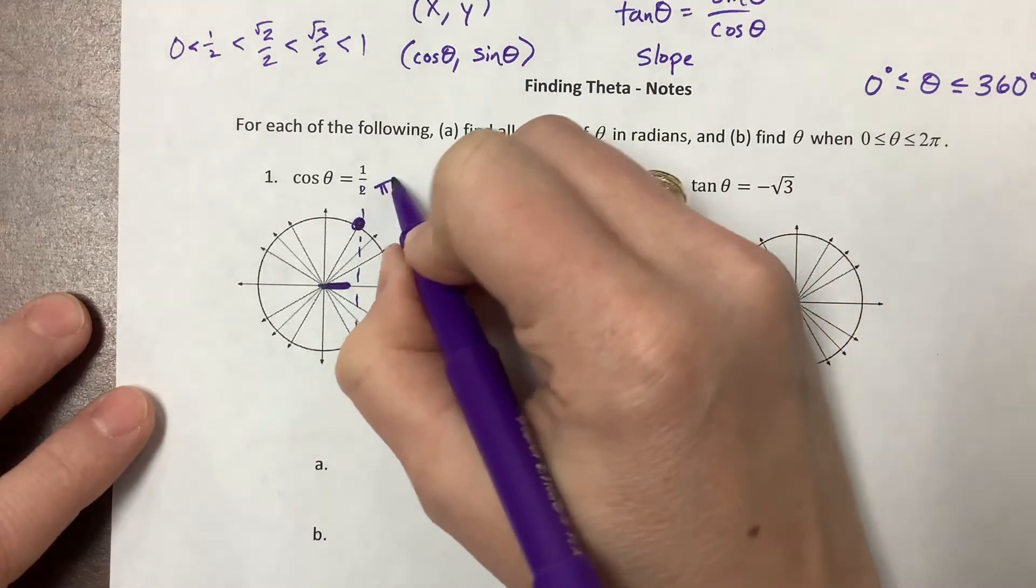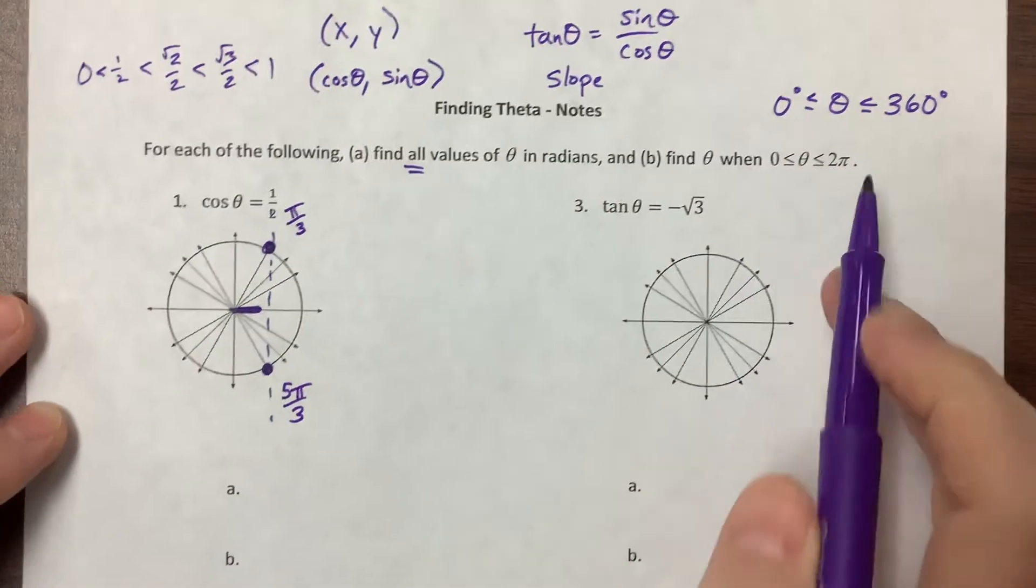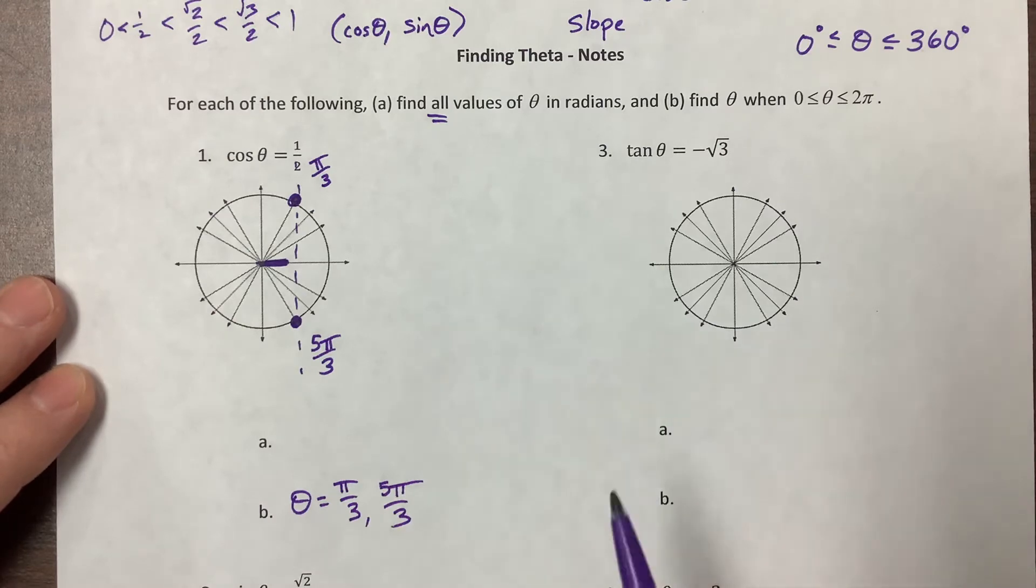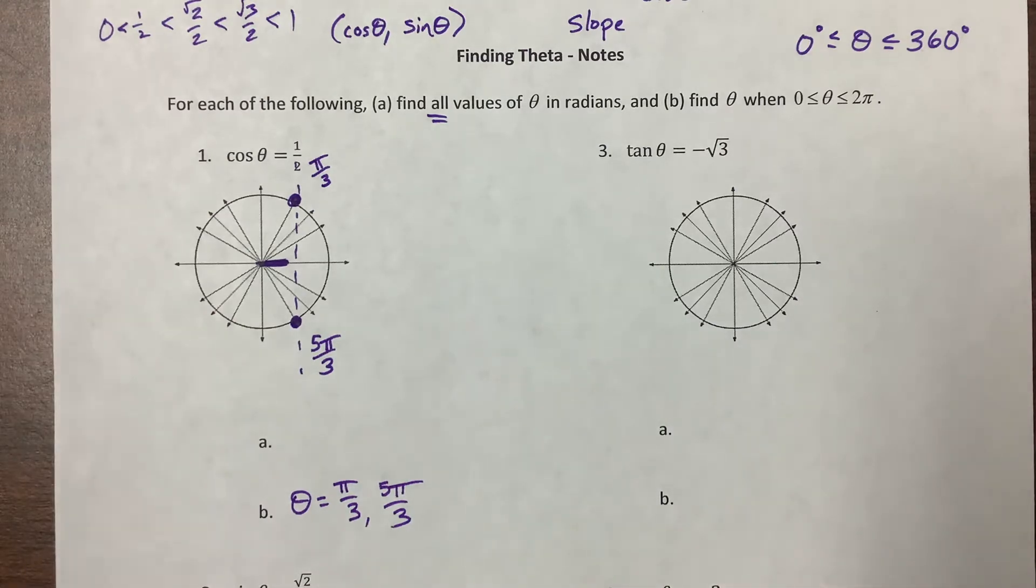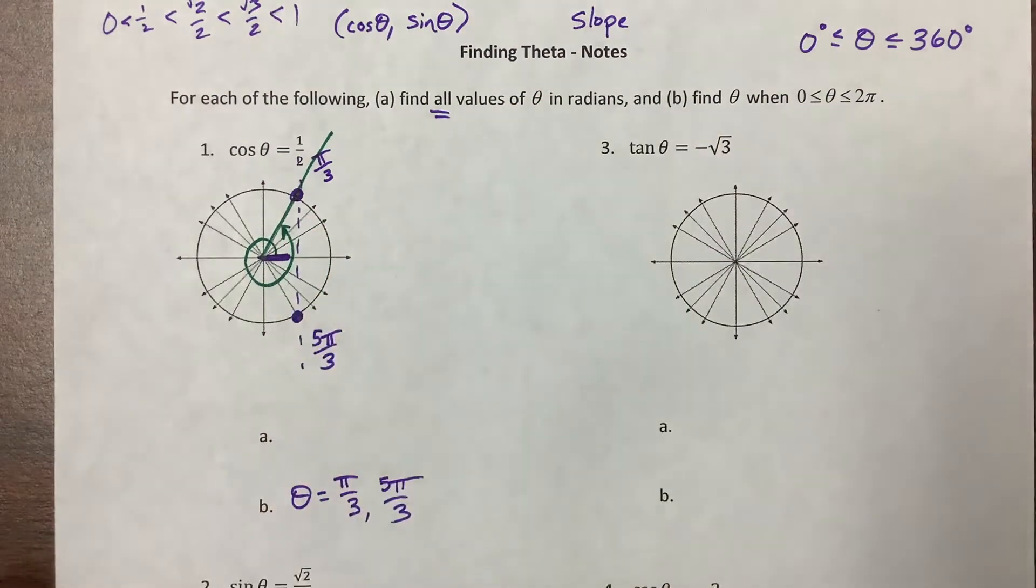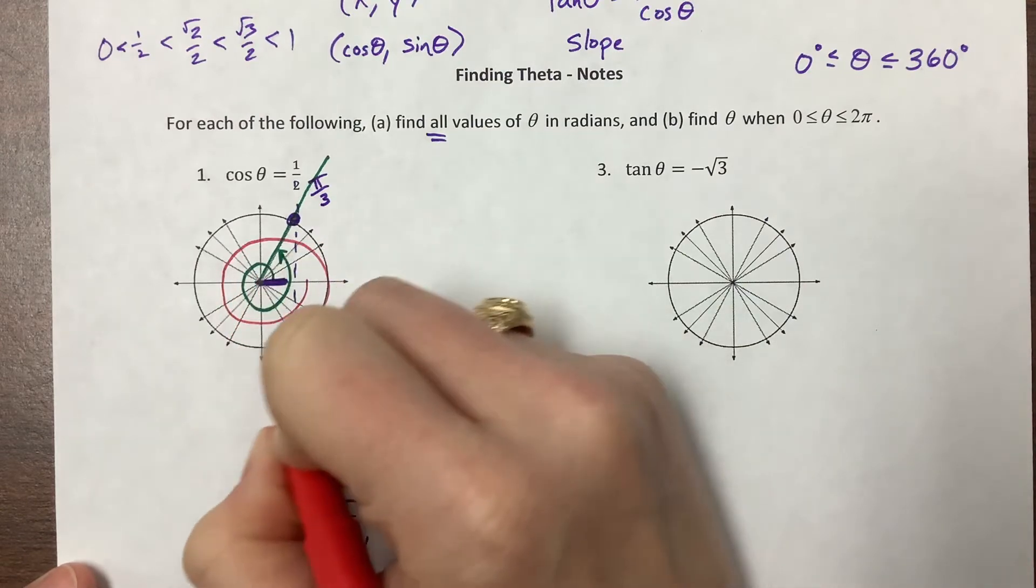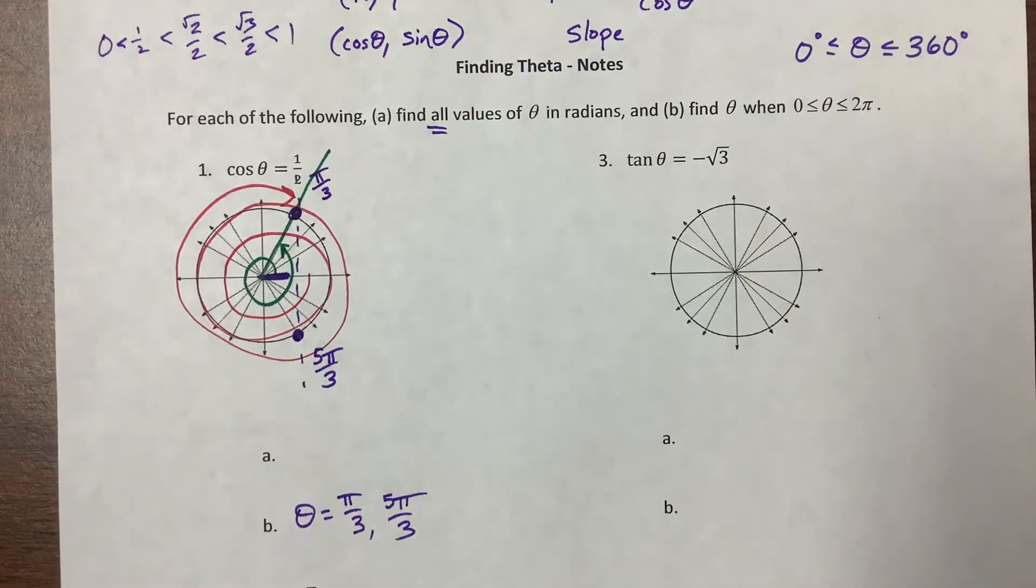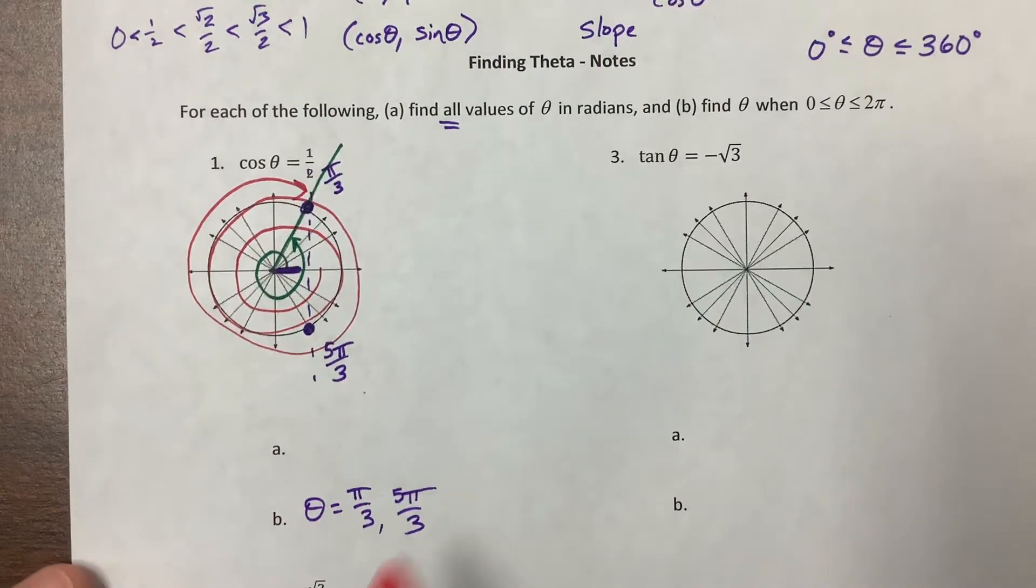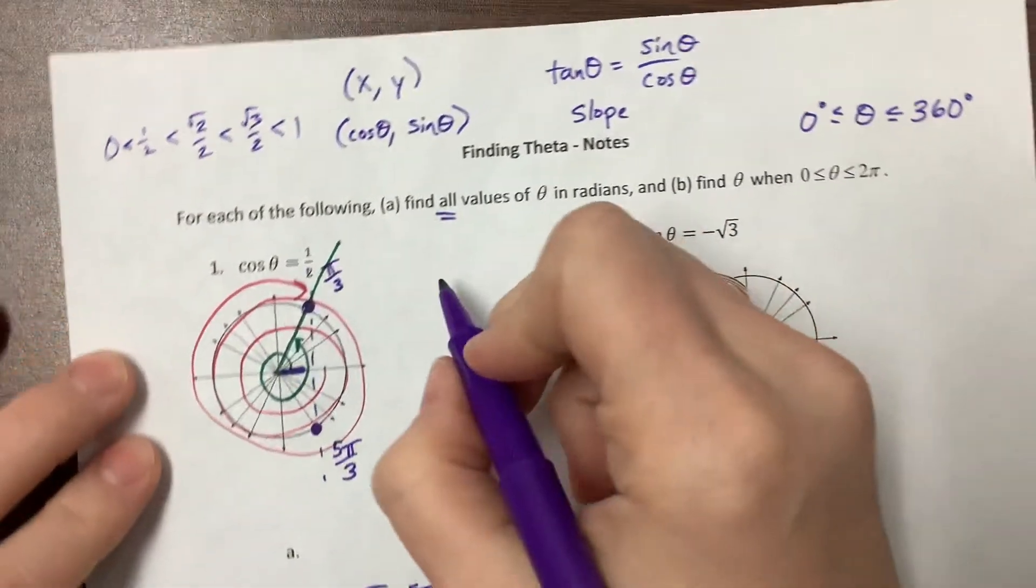Now, I know my unit circle, and I know that this is pi over 3, and I know that this is 5 pi over 3. And when they say find my answers between 0 and 2 pi, I'm done. Theta equals pi over 3, and theta equals 5 pi over 3. But when they say find all, that's where we need to think about our coterminal angles. I could have this right here, and I could have gone around once and then stopped. Or I could have gone in the negative direction, and I could have circled a few times and then stopped here.